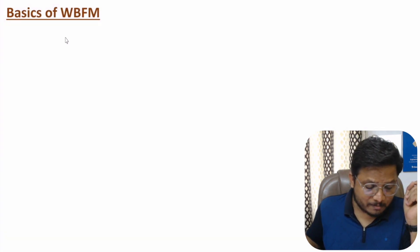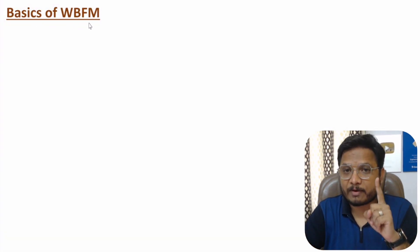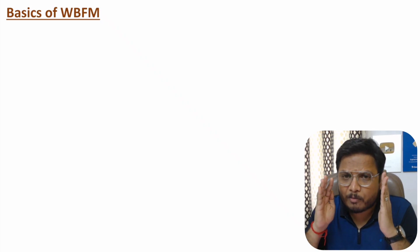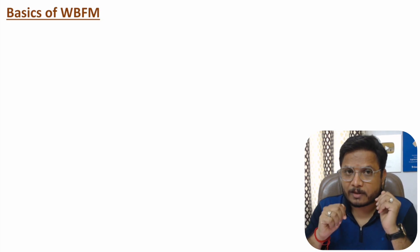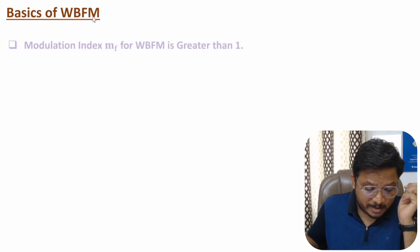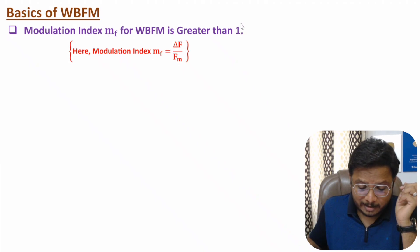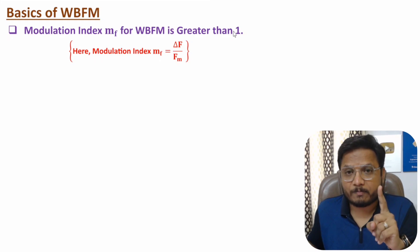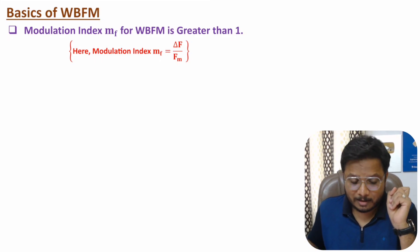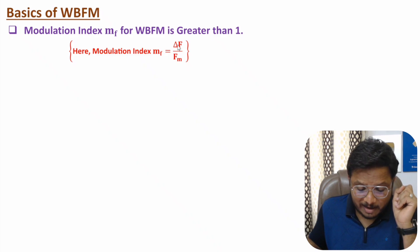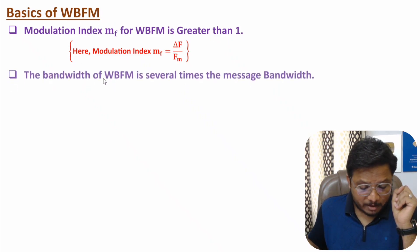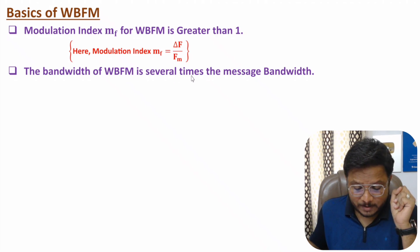Let us start with the first agenda: basics of WBFM. WBFM means Wideband Frequency Modulation. Here we will be having wide bandwidth with the FM signal. To have wide bandwidth with an FM signal, modulation index must be greater than one. This is a very essential point to note. With WBFM, modulation index is greater than one. Modulation index is a ratio of frequency deviation to the frequency of the message signal.